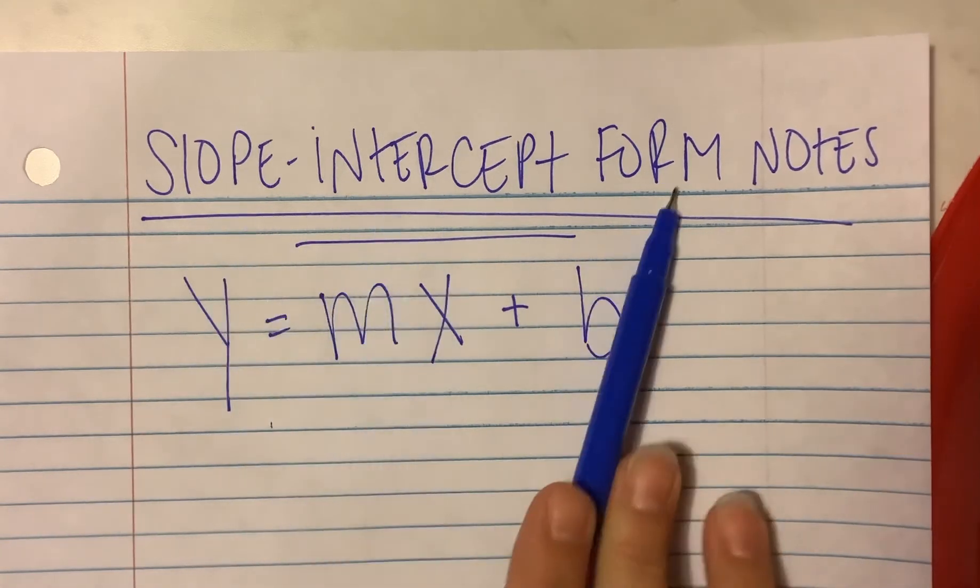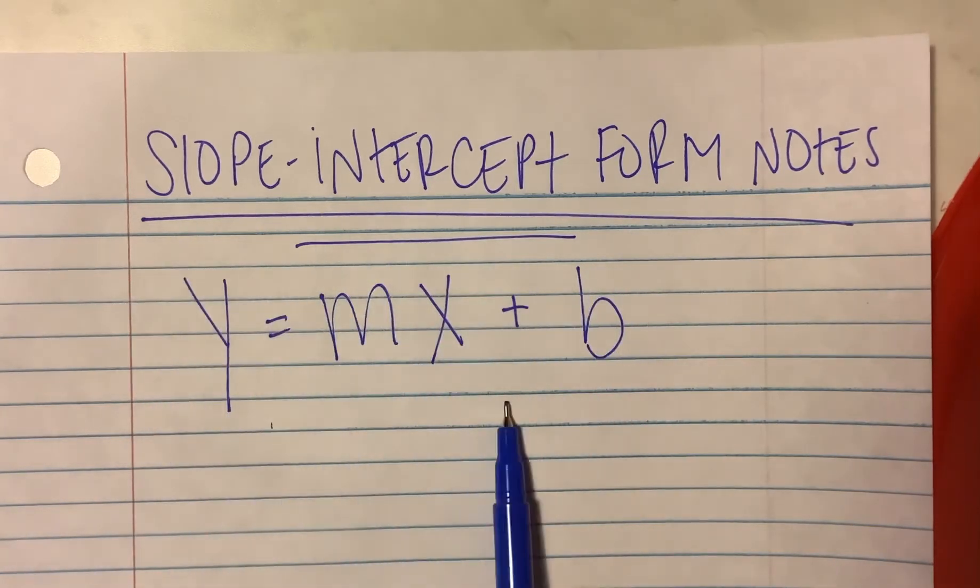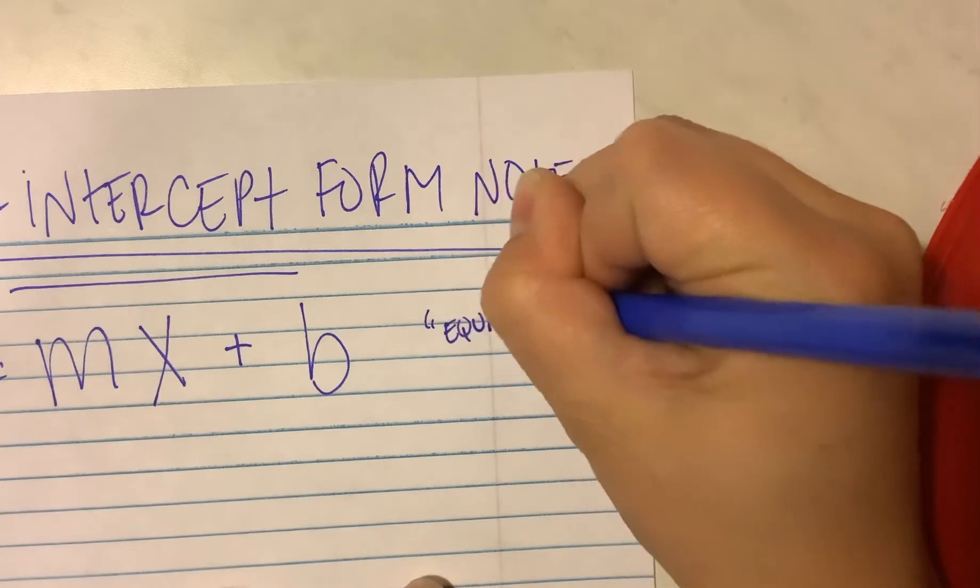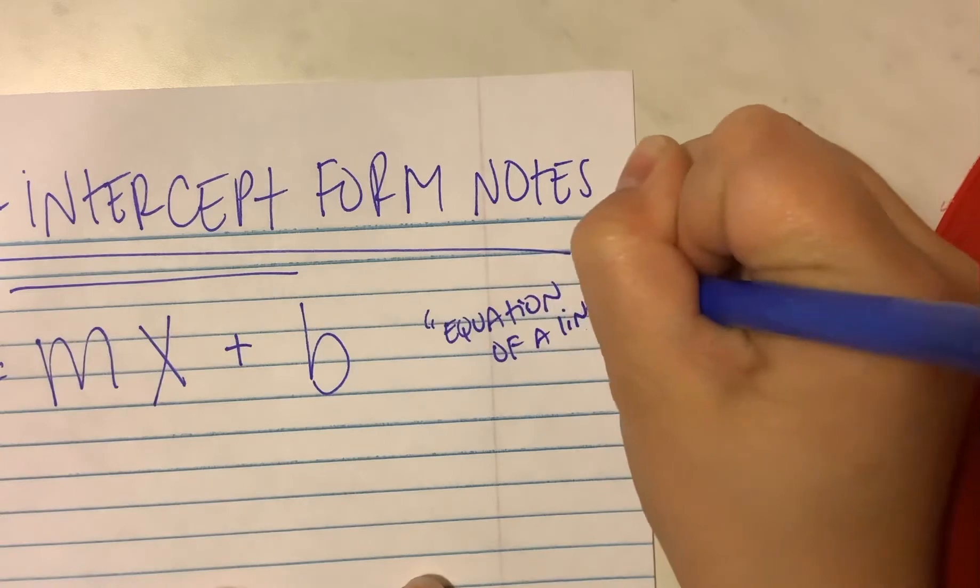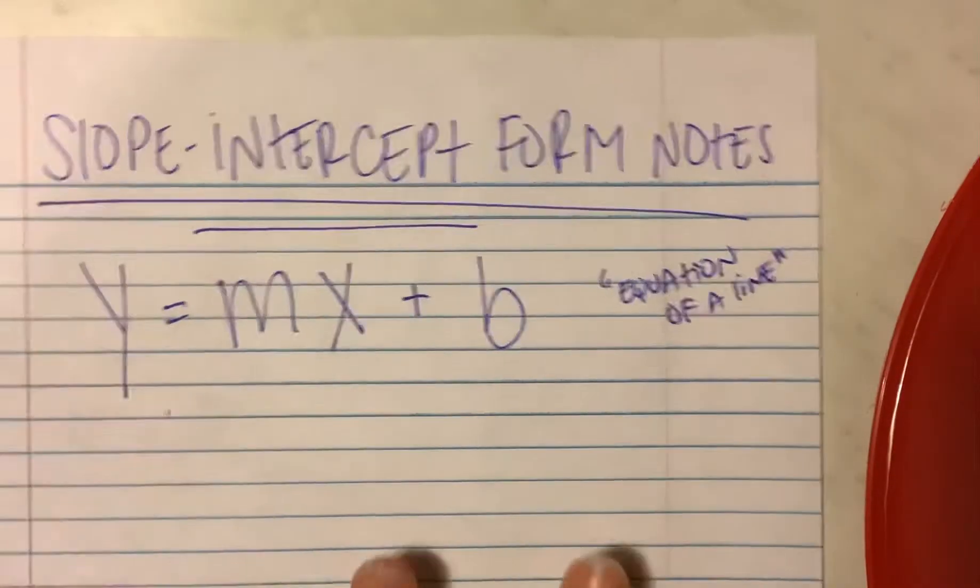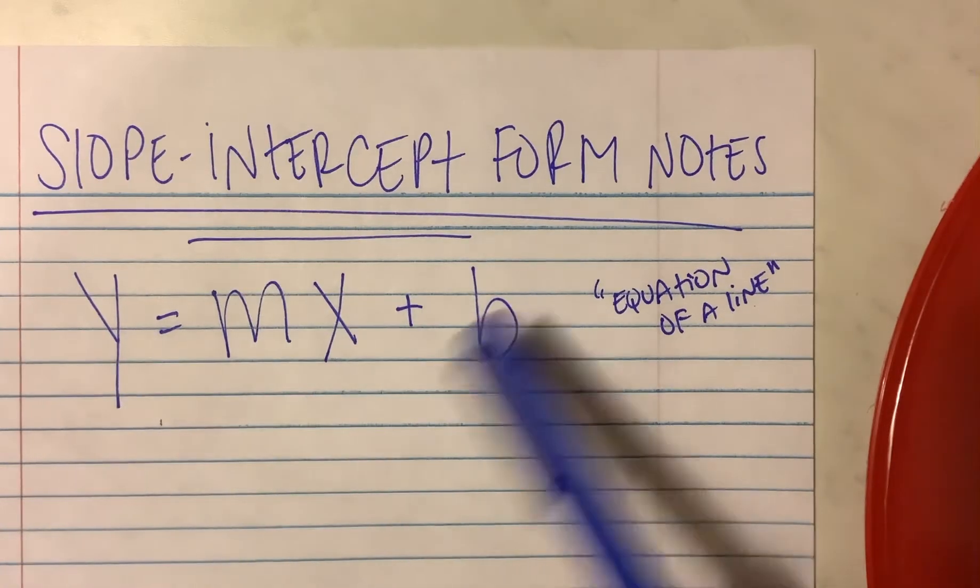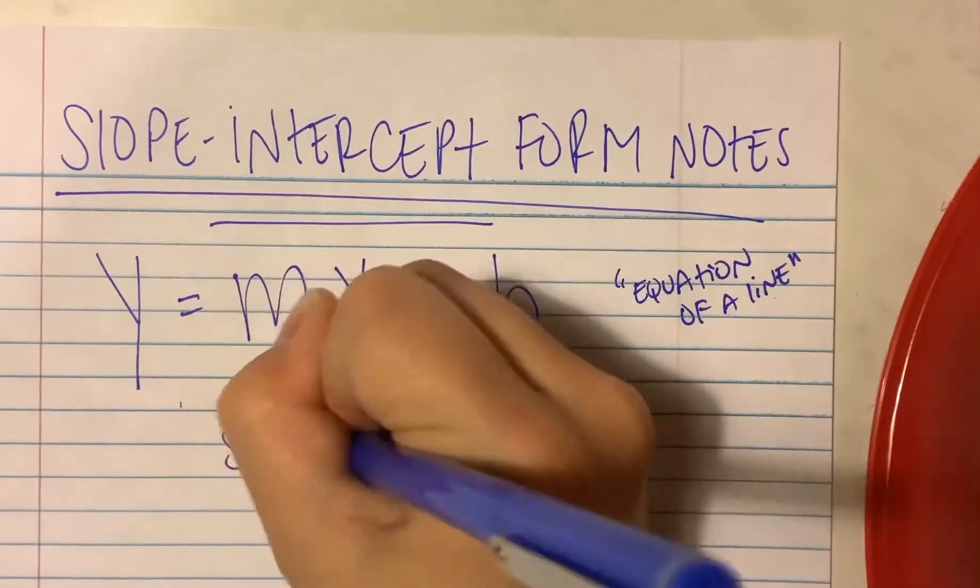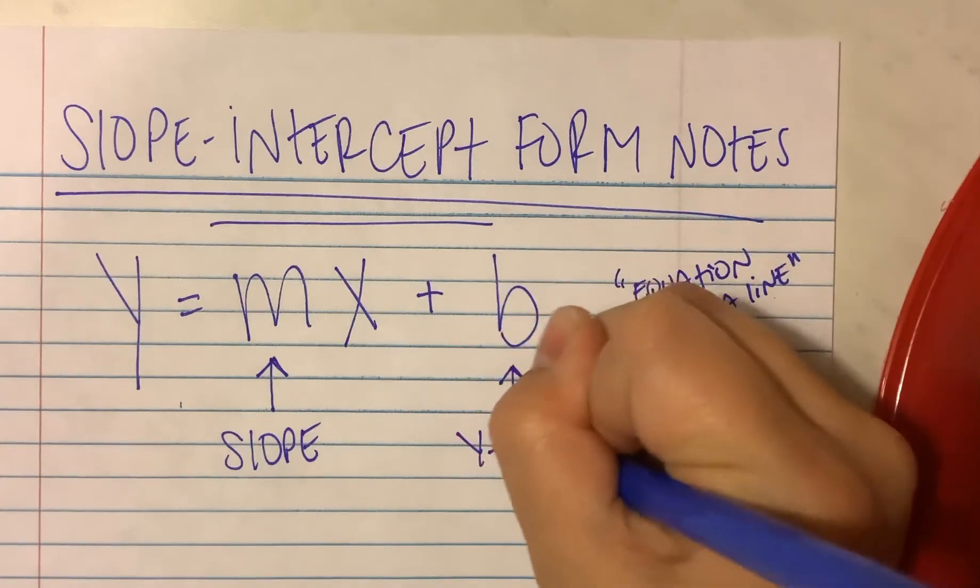It is called slope-intercept form. So this is the form, the style of an equation of a line. Over here to the side, I want you to put equation of a line. That is what this is. It's an equation of a line. So any line that we have, we can make an equation for it that looks like this by replacing the m with something we know, the slope, and replacing the b with something we know, the y-intercept.